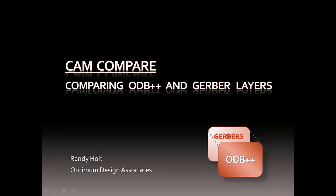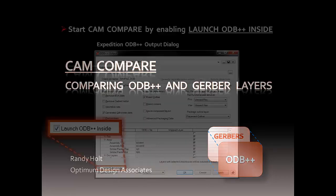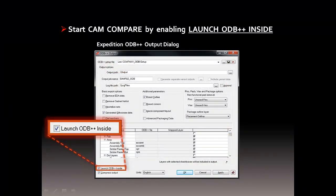The CAM Compare tool is used for comparing ODB++ layers against their equivalent Gerber layers, so you can be confident each dataset will produce a matching printed circuit board. This is only required if you must still support the older Gerber format in your manufacturing data package. You can only start the CAM Compare tool by enabling the Launch ODB++ Insight option found during the creation of your ODB++ export from Expedition.